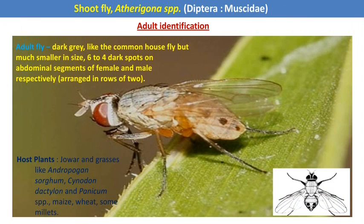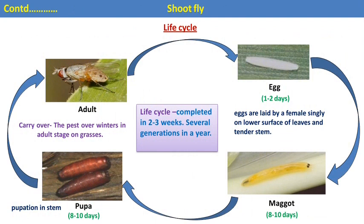In the life cycle of this pest, after male-female mating, the female fly lays eggs singly on the lower surface of the leaves and the tender stem. After hatching, a legless larva emerges and completes four to five instars during development. This legless larva is called maggots and is the damaging stage. After the final instar, the maggots go into pupation, which occurs inside the stem of the wheat crop.